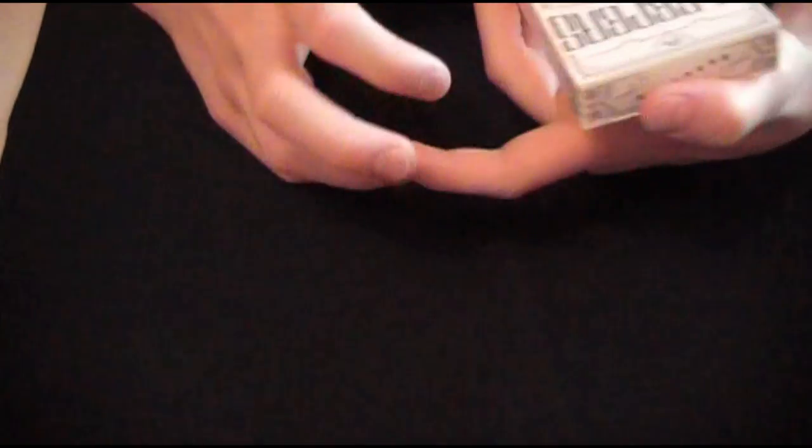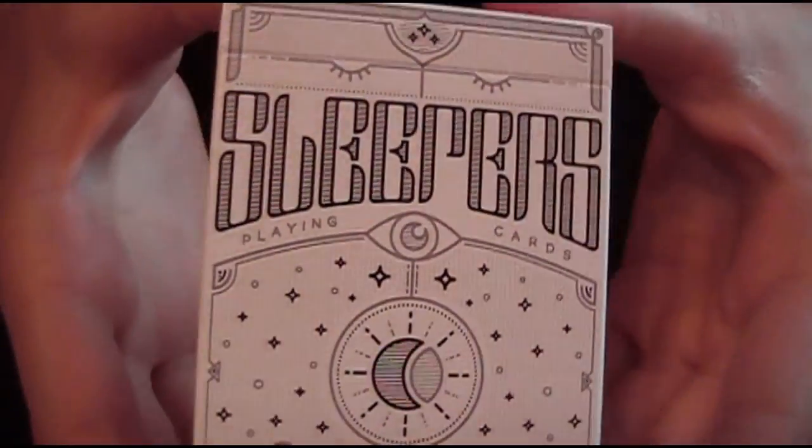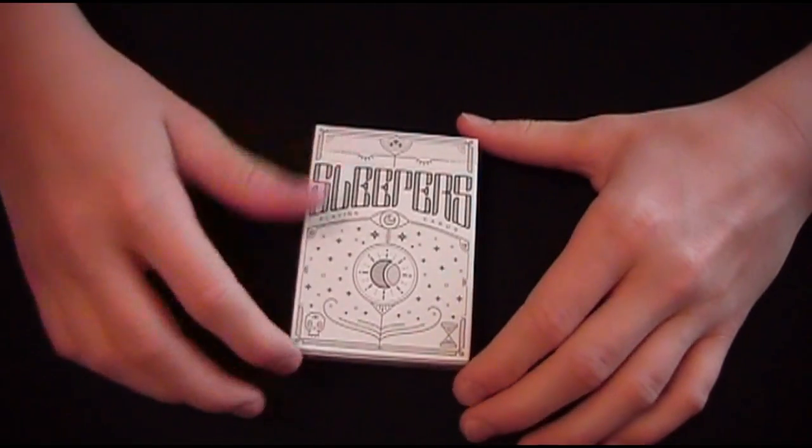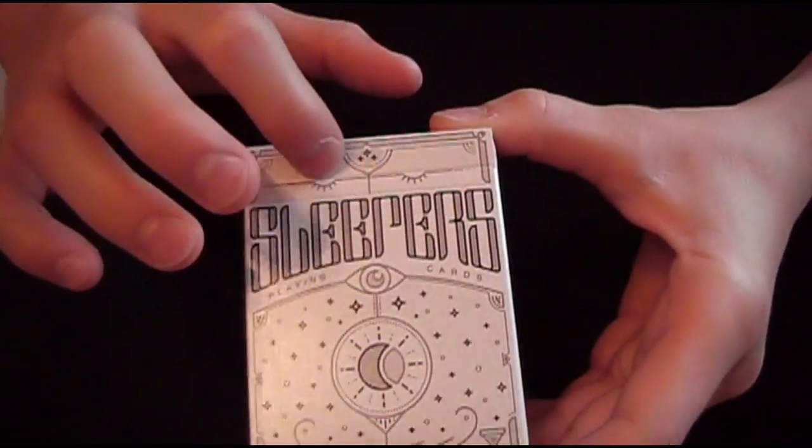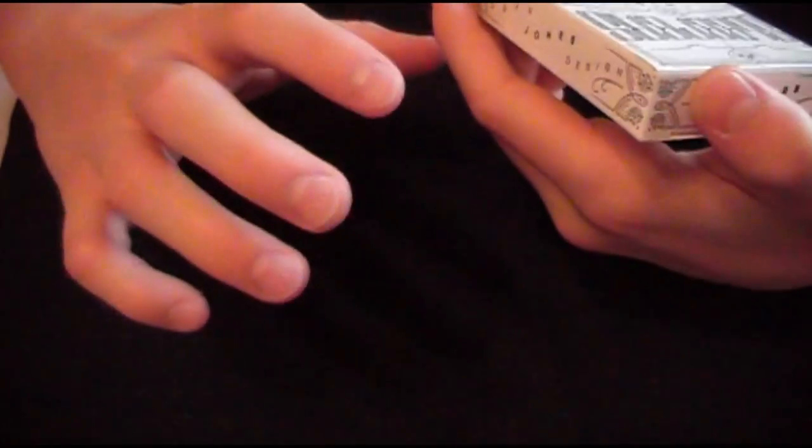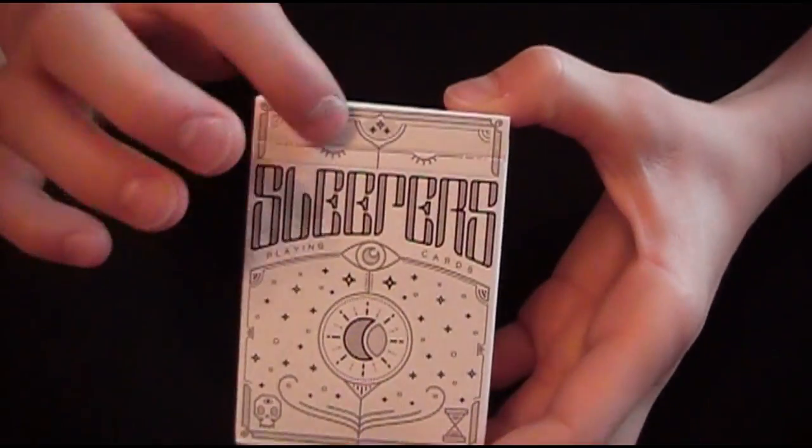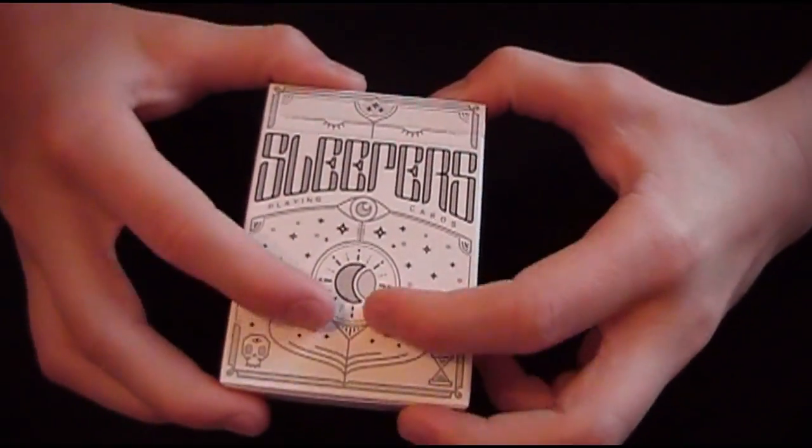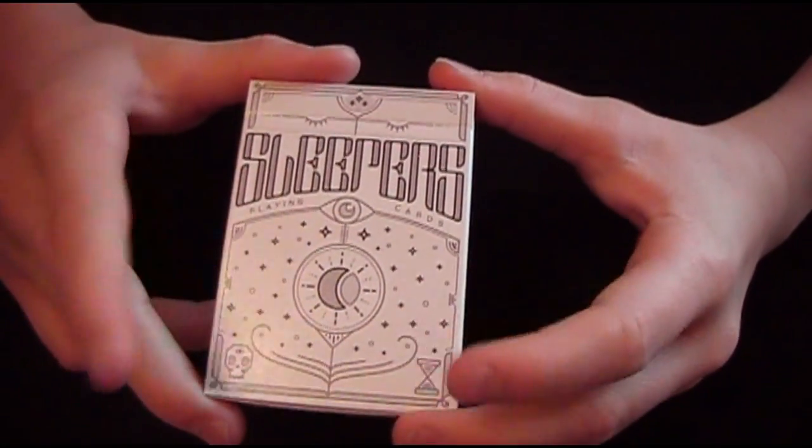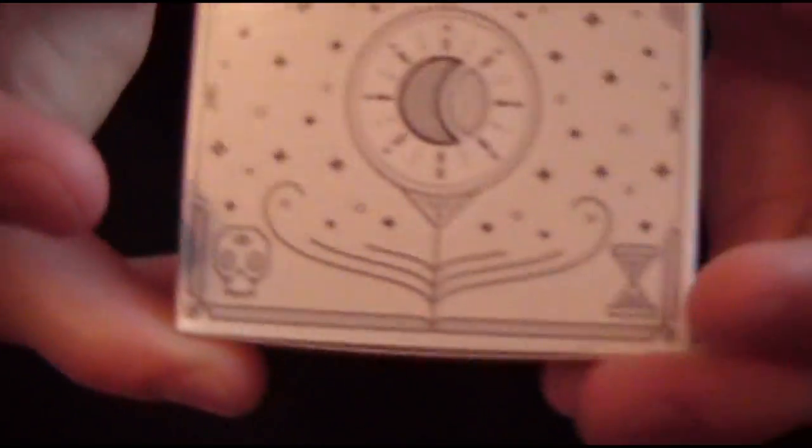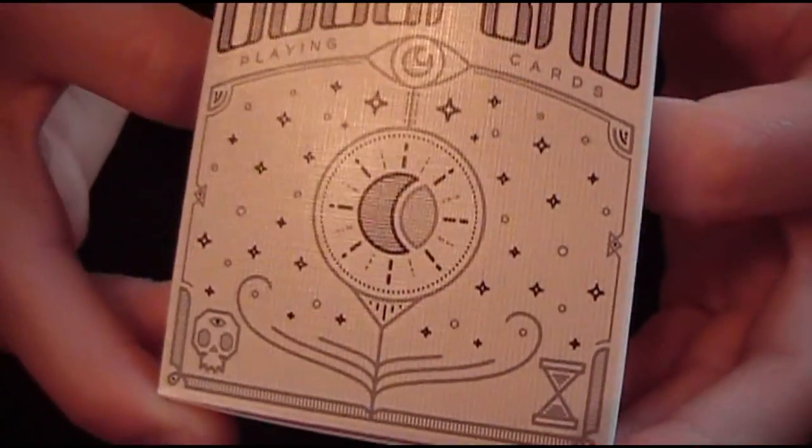So into the box here, it says Sleepers playing cards. I really like the font that they use. It's supposed to be like every card is sleeping except for the King of Diamonds. Here it has three little stars. These are supposed to be eyelids that are asleep, and these are stars, the night sky, the sun and the moon, a skull with an eye on it, and an hourglass representing time.